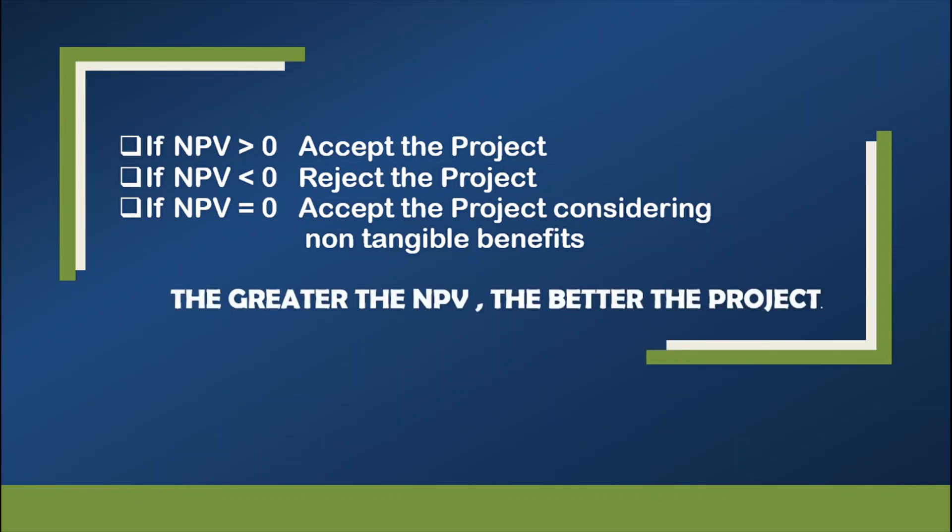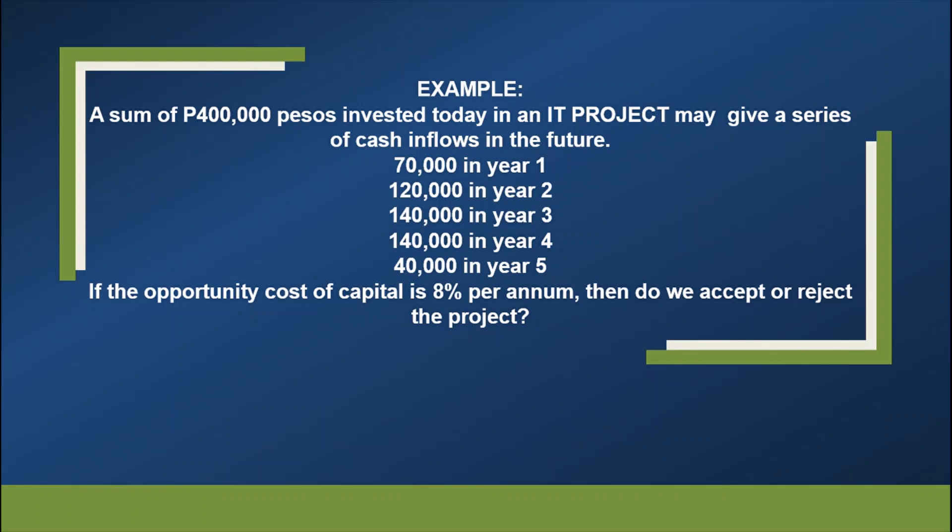Remember, the greater the NPV, the better the project. So to explain further or to illustrate further, I have here an example. In year 5, 40,000. If the opportunity cost of capital is 8% per annum, then do we accept or reject the project?